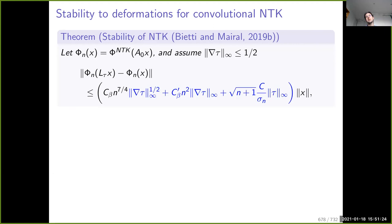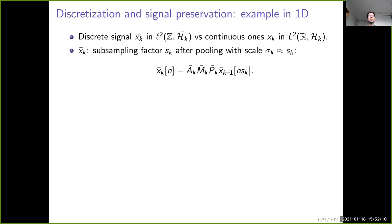For NTK in the context of multi-layer convolutional neural networks, the results are more complicated. Instead of something that grows as n times the norm of the deformation, you get n-squared plus an additional term. So NTKs are not as stable as CKNs, but by paying a price in stability you gain in expressiveness.